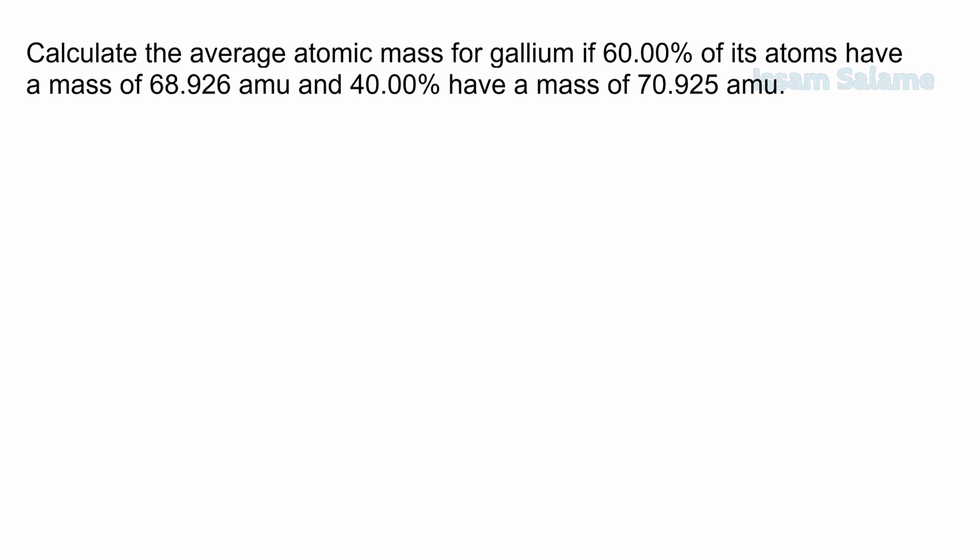In this question, we have to calculate the average atomic mass of gallium. We have two isotopes of gallium. The first one, its abundance is 60%, while its mass is 68.926 amu. And the second one, its percentage of abundance is 40%, while its mass is 70.925 amu.